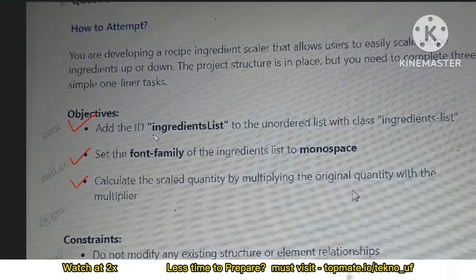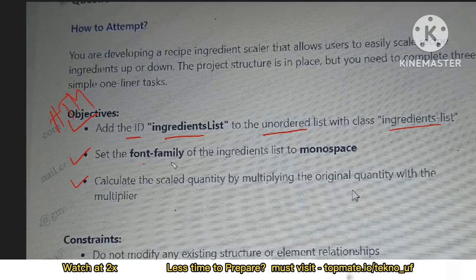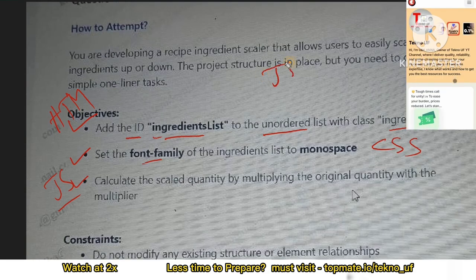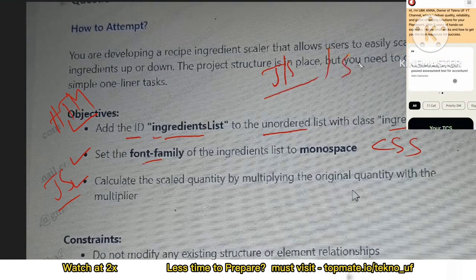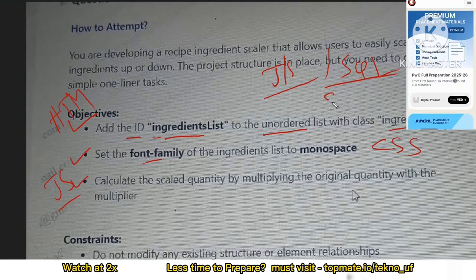The first objective is to add the ID 'ingredients-list' to the unordered list with the class 'ingredients-list' — this is the HTML task. The CSS task is to set the font-family of the ingredients list to monospace. The last task is from JavaScript. If you are from cluster one and cluster three, that means you have Java and CSE code respectively, and those along with SQL have 80 to 85 percent weightage.